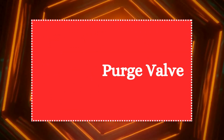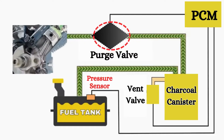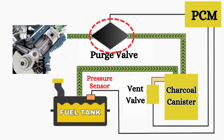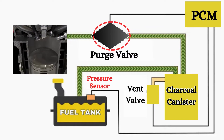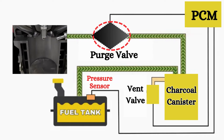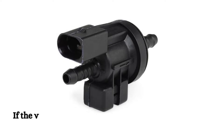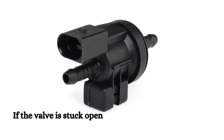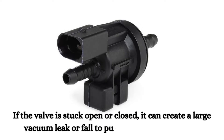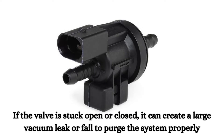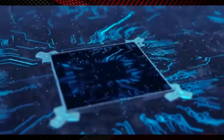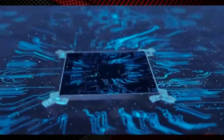2. Faulty purge valve. The vent valve or purge valve controls the release of fuel vapors from the EVAP system to the engine for combustion. If the valve is stuck open or closed, it can create a large vacuum leak or fail to purge the system properly, resulting in the P0455 code.